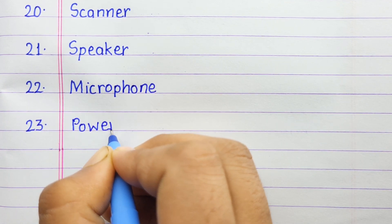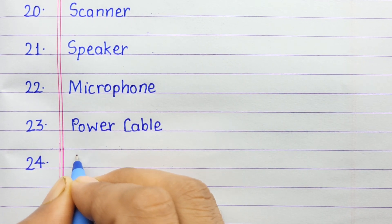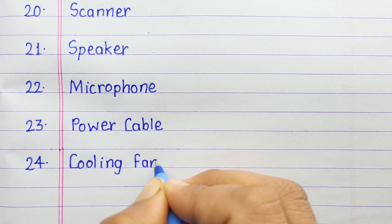Number twenty-three: power cable. Number twenty-four: cooling fan.